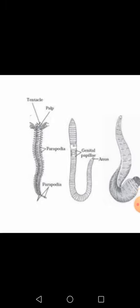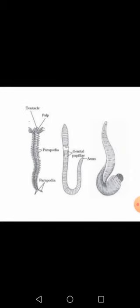Here the first figure is of Nereis, the second figure is of earthworm, and the third figure is of Hirudo or leech. I think these two phylums — Aschelminthes and Annelida — are enough to discuss today. Make your notes and I will meet you tomorrow with some new topics. Till then, thank you and bye.